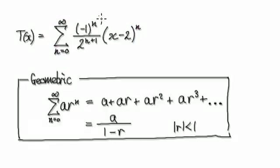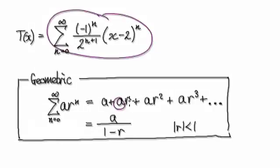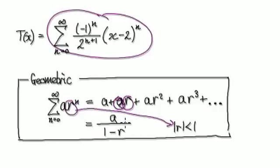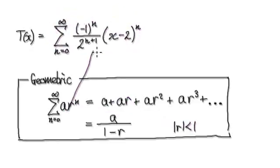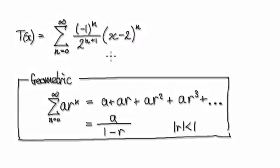The thing is, we need to extract a and r from this expression — but we don't need a, we just need to find r. Because in order for the series to converge, we require the common ratio to be strictly less than 1. So r is buried in there somewhere, and we need to extract it.